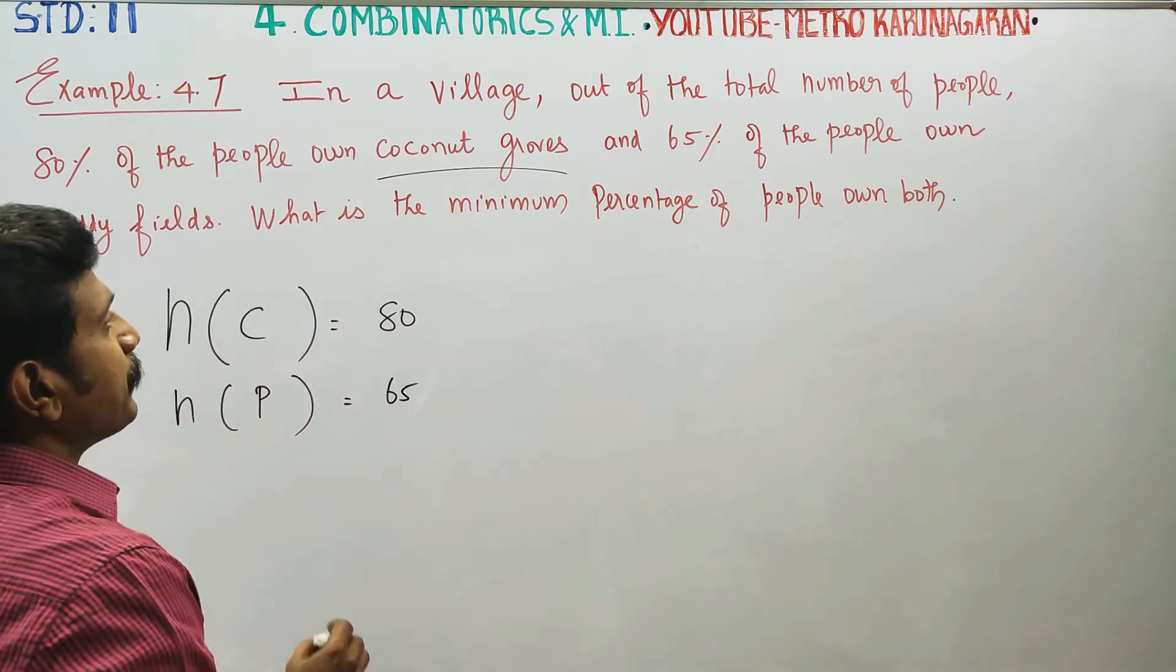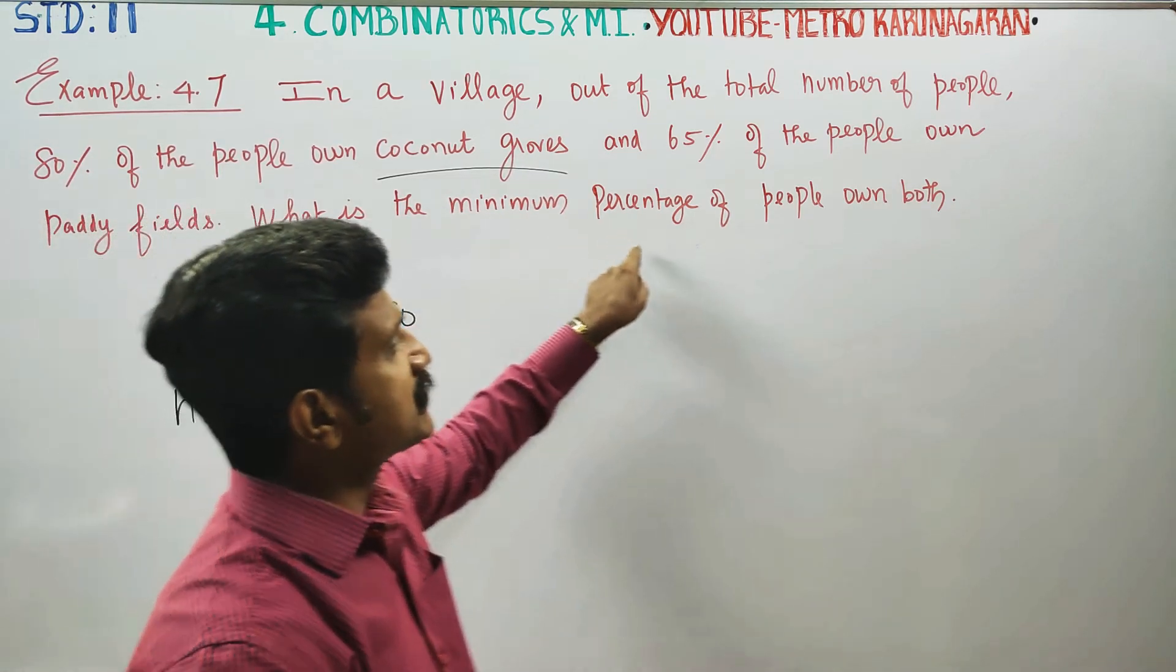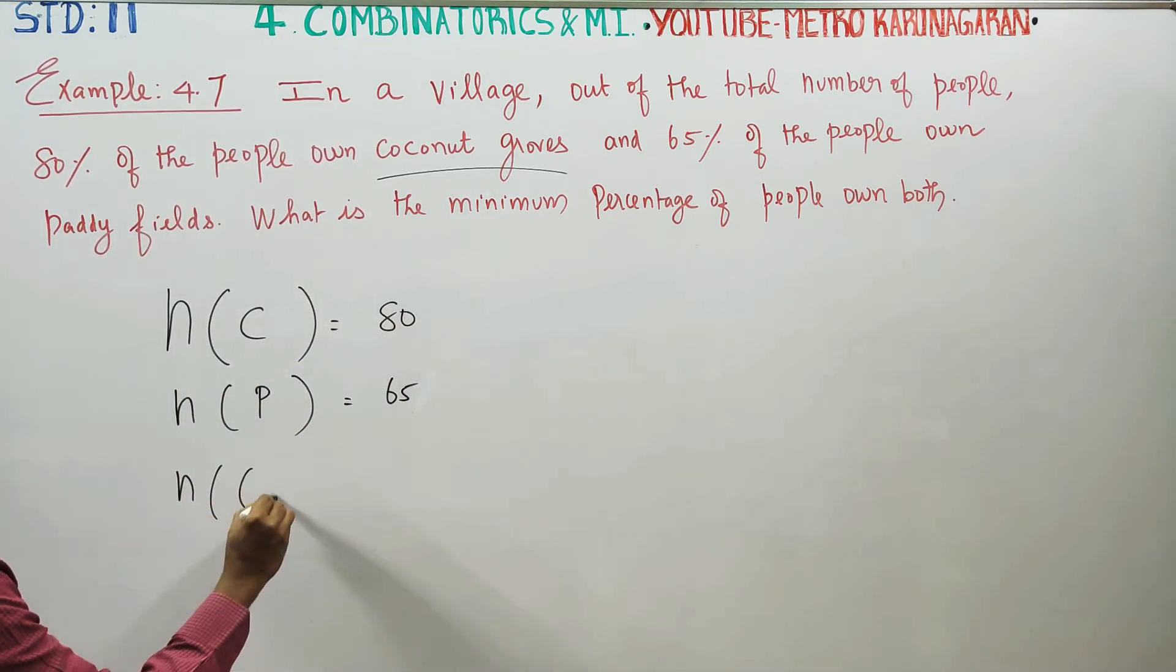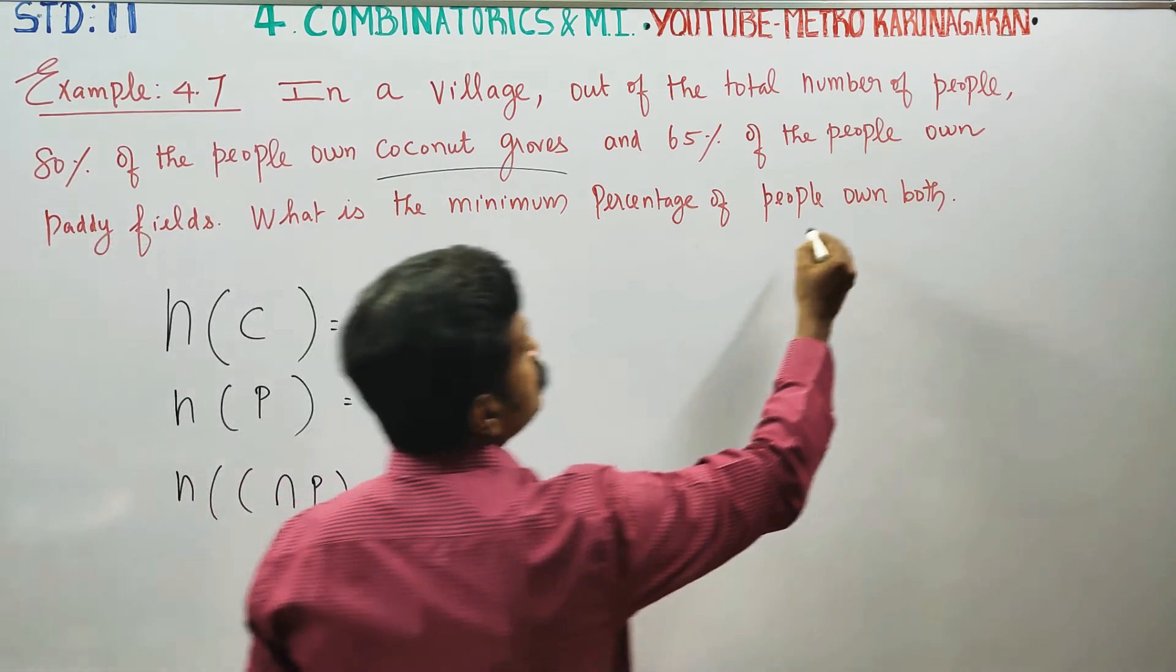What is the minimum percentage of the people who own both? Both are the coconut intersection paddy. This is intersection, coconut and paddy both.